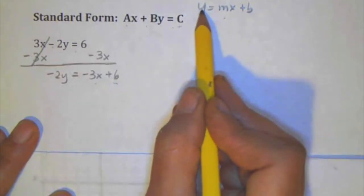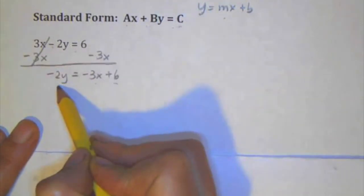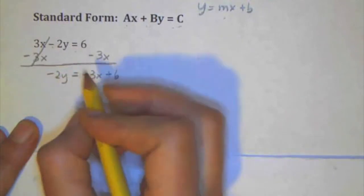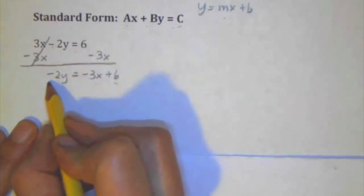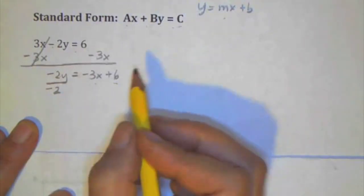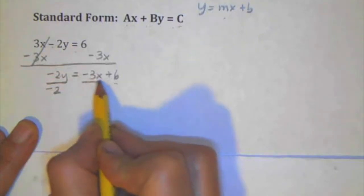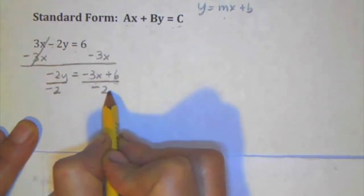And then I look at this and y is still not by itself. It's got this negative 2 in front. And if you remember, it's negative 2 times y, so I'm going to do the inverse operation, which is divide by negative 2. And if I do it to one side, I have to do it to the whole side.